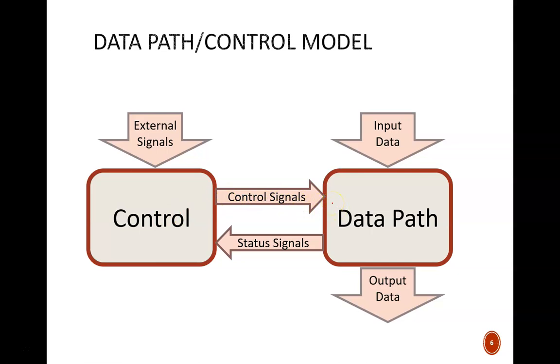The control unit is always a sequential circuit, or a finite state machine. It must be because of this feedback loop. Past inputs help determine what control decisions are made next.